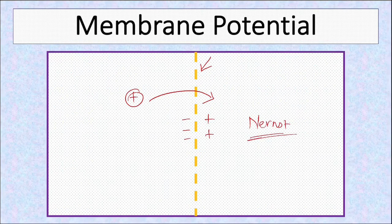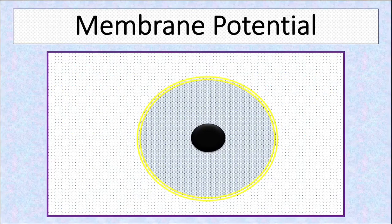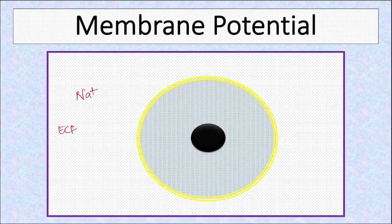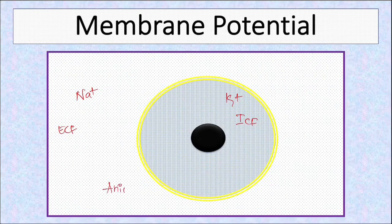But what will happen if more than one ion is permeable? In a cell, there are many permeant ions. For example, sodium is the major extracellular cation and potassium is the major intracellular cation. Let's consider anions to be impermeant in this example.